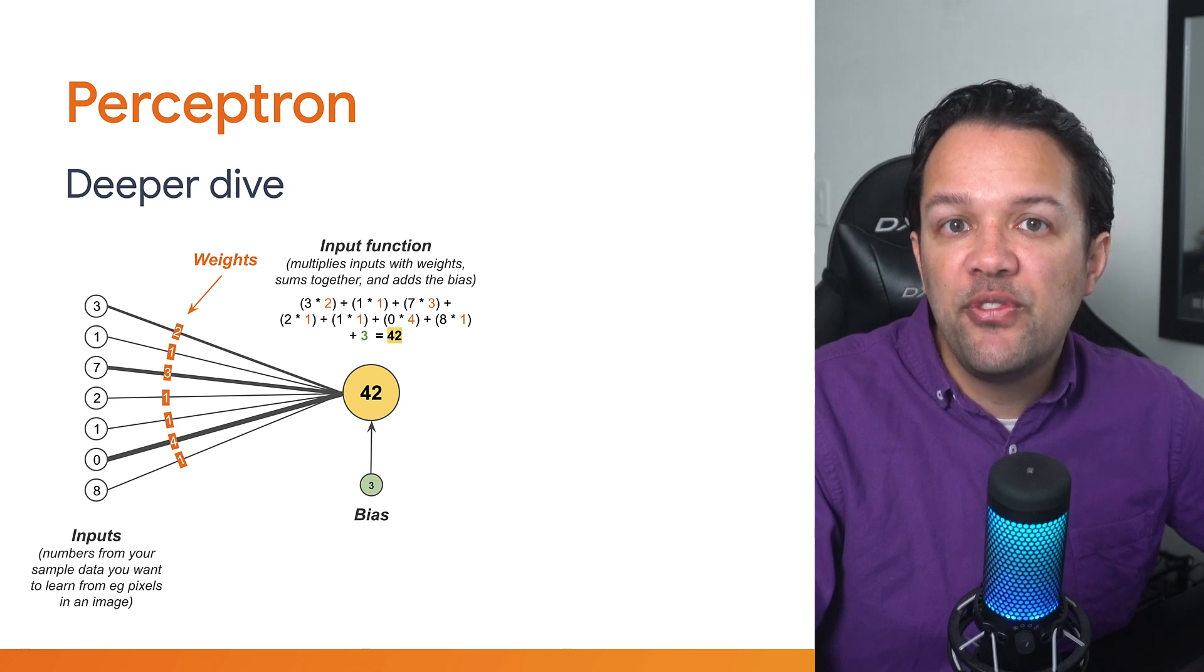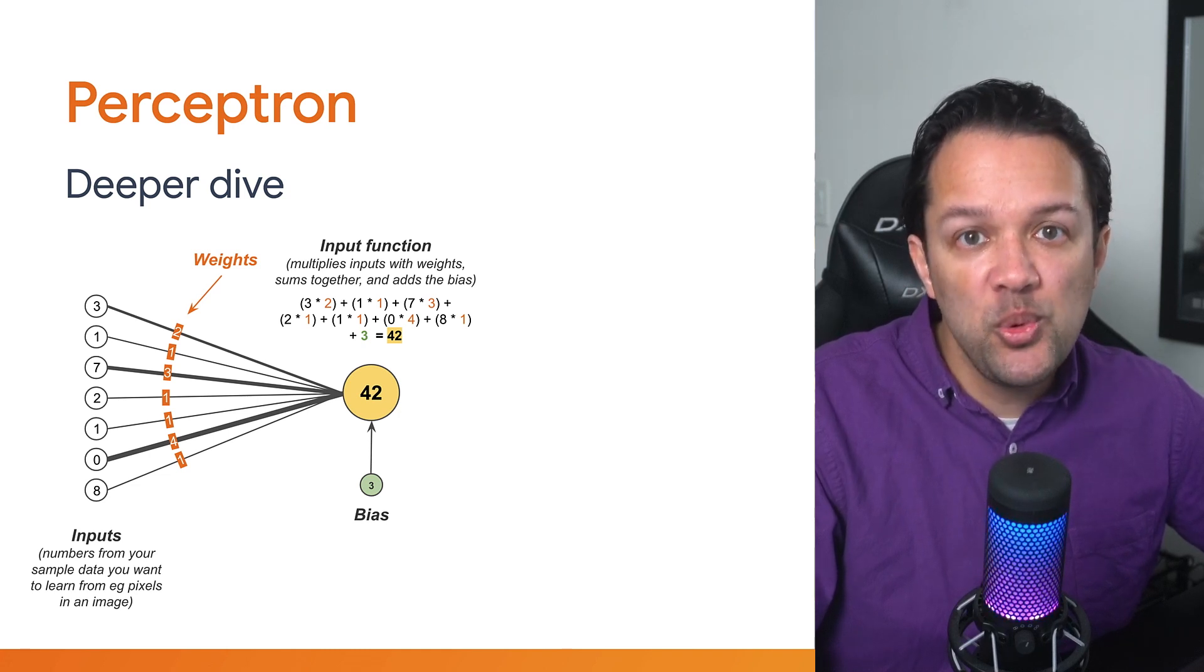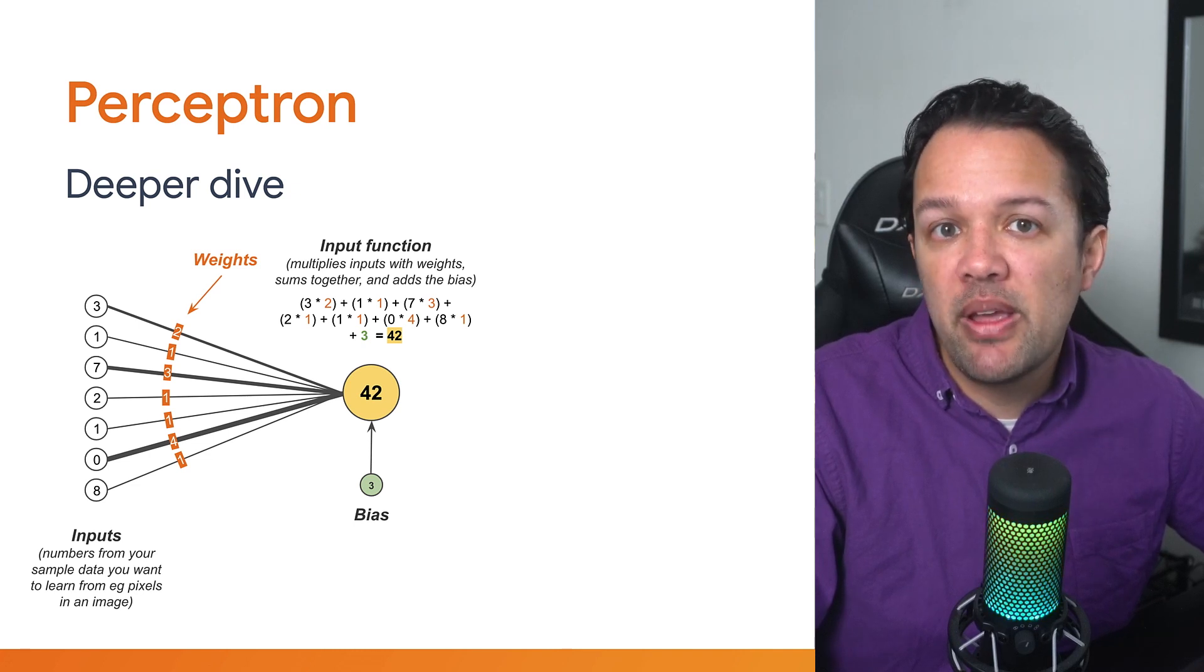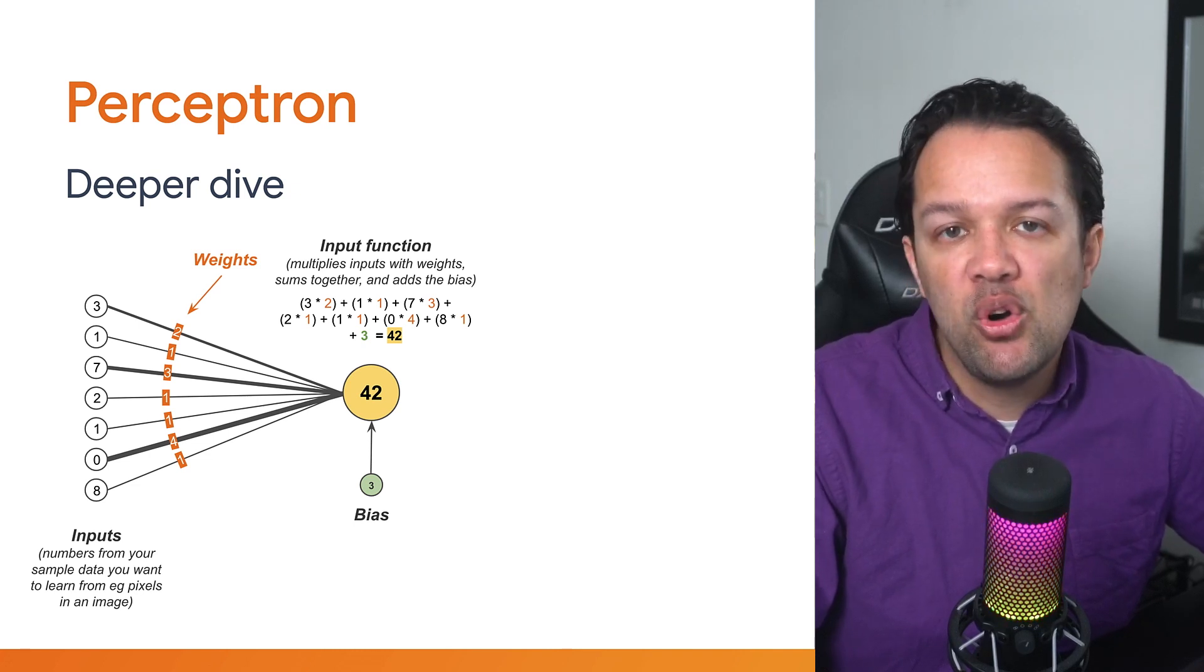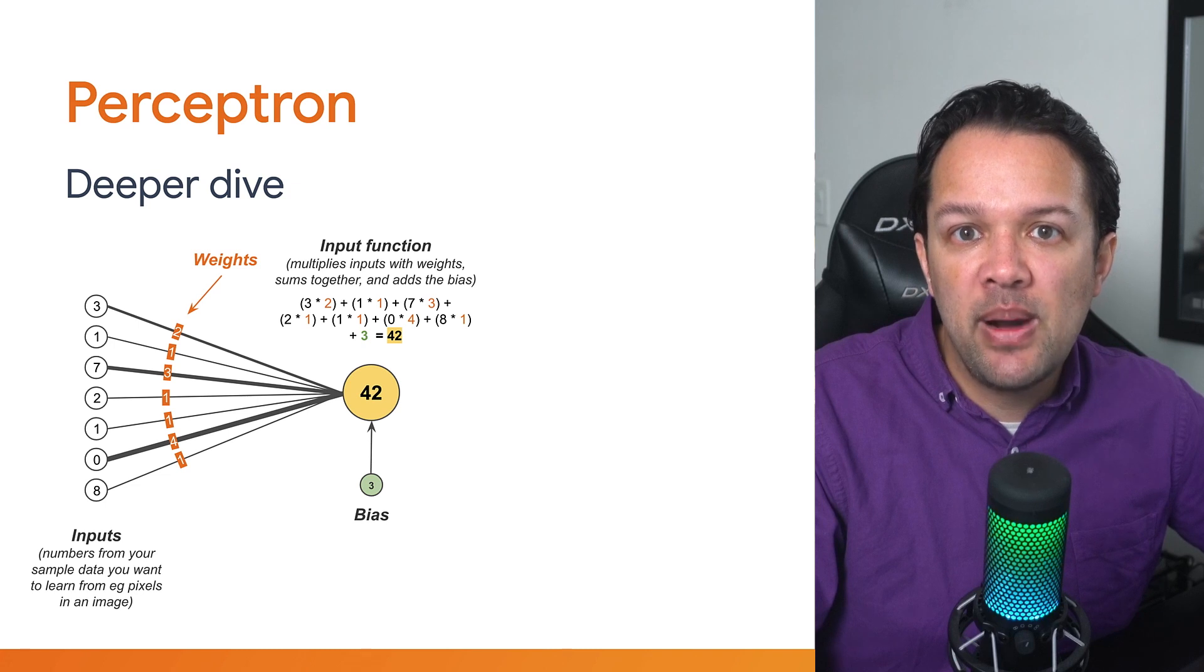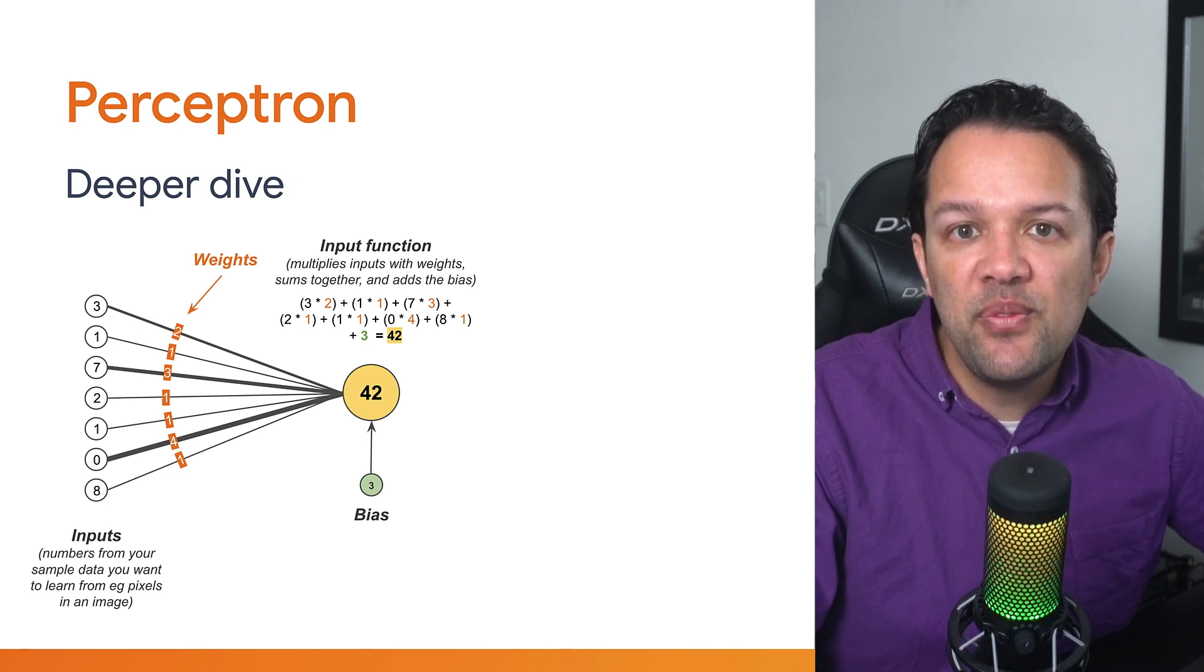In the example shown here, the first input 3 would be multiplied by 2, producing a value of 6. The second input with a value of 1 would be multiplied by 1, which would still be 1. And the third input 7 would be multiplied by 3, producing 21, and so on for all the other inputs. If you add the results of these multiplications together and then add the final bias of 3 in this case, you'll get the number 42 as shown in the yellow circle.